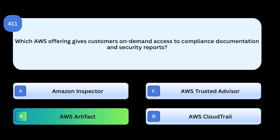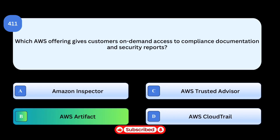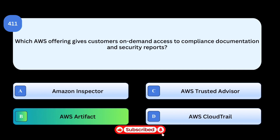Correct answer: AWS Artifact. AWS Artifact is the service that provides self-service access to AWS compliance documentation, audit reports, and security certifications. Why others are incorrect: Amazon Inspector is used for automated security assessments, not compliance reports. AWS Trusted Advisor offers best practice recommendations, not compliance reports. AWS CloudTrail logs API activity for governance auditing, not compliance documentation.